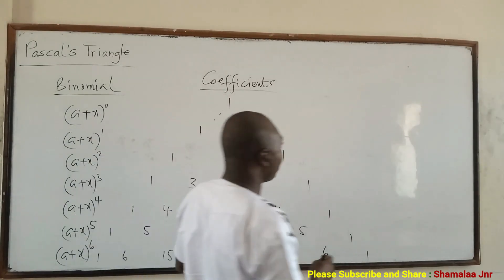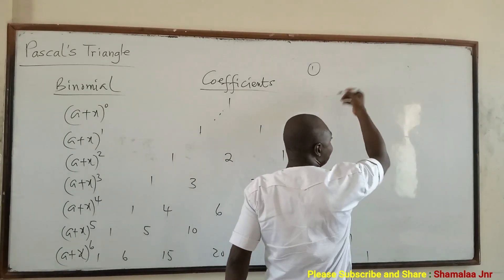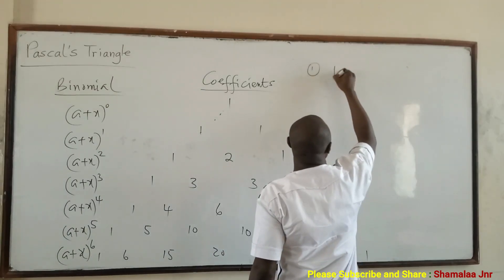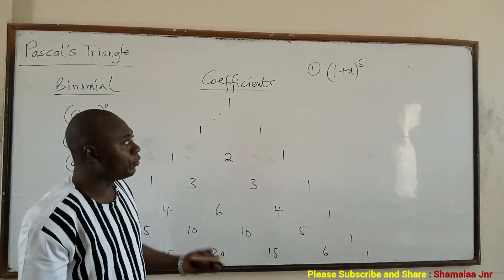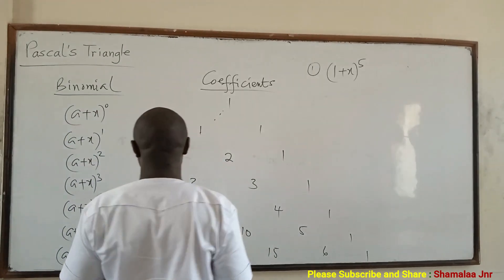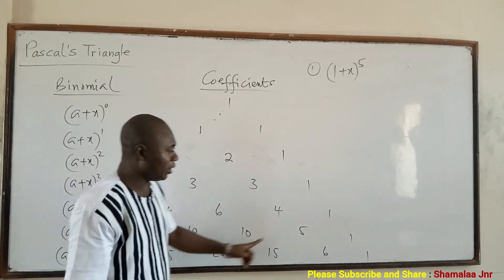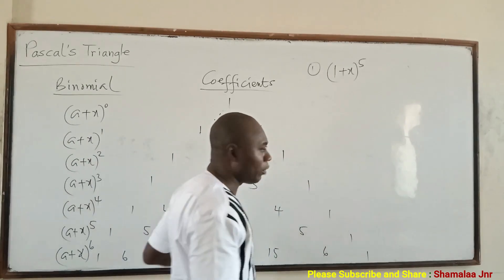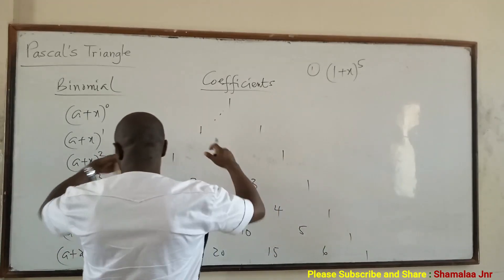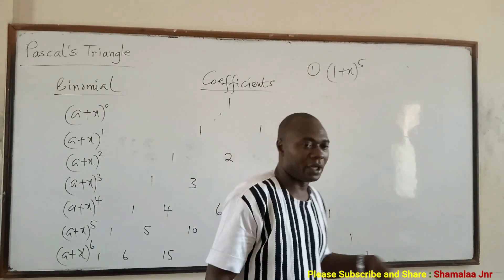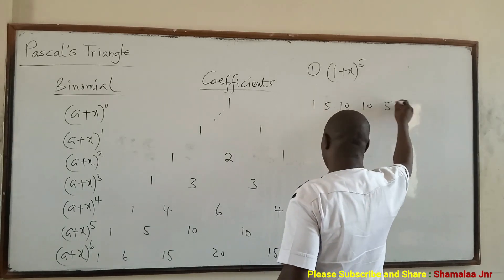Let's look at some questions. Use Pascal's triangle to expand (1 + x) all raised to power 5. Because this is raised to the power 5, the coefficients you are going to use are 1, 5, 10, 10, 5, 1. So you have to look at the power, and the power will tell you the coefficients you have to use. You can just construct the triangle and use the corresponding coefficients.